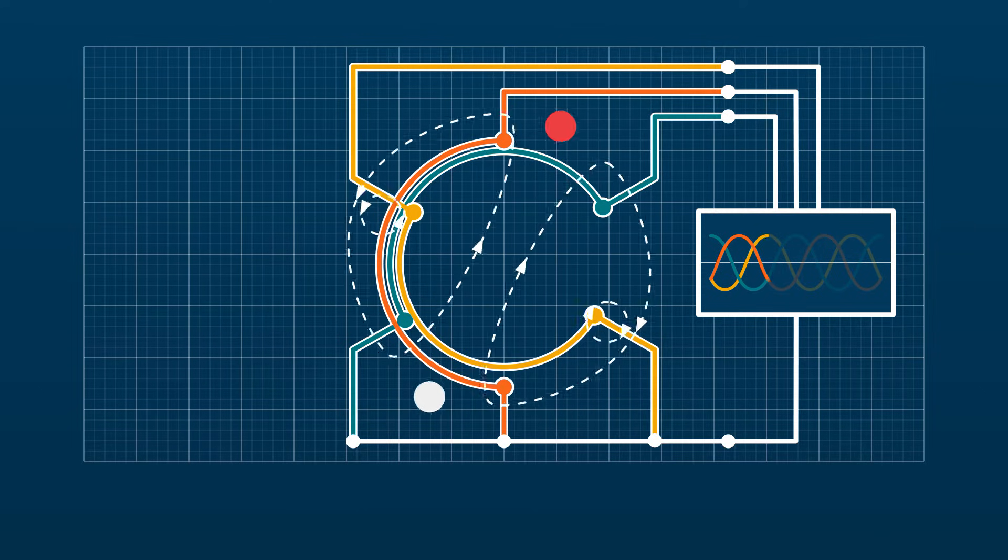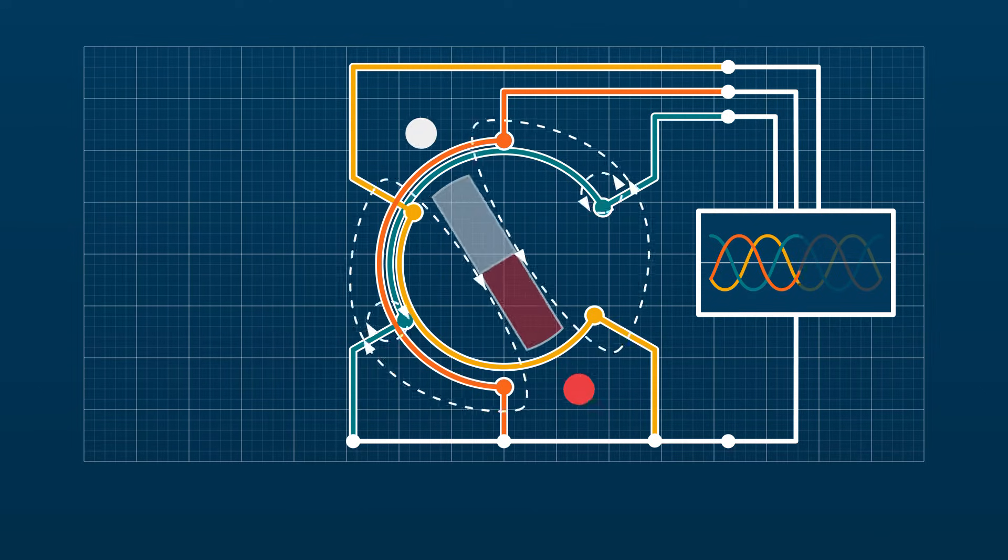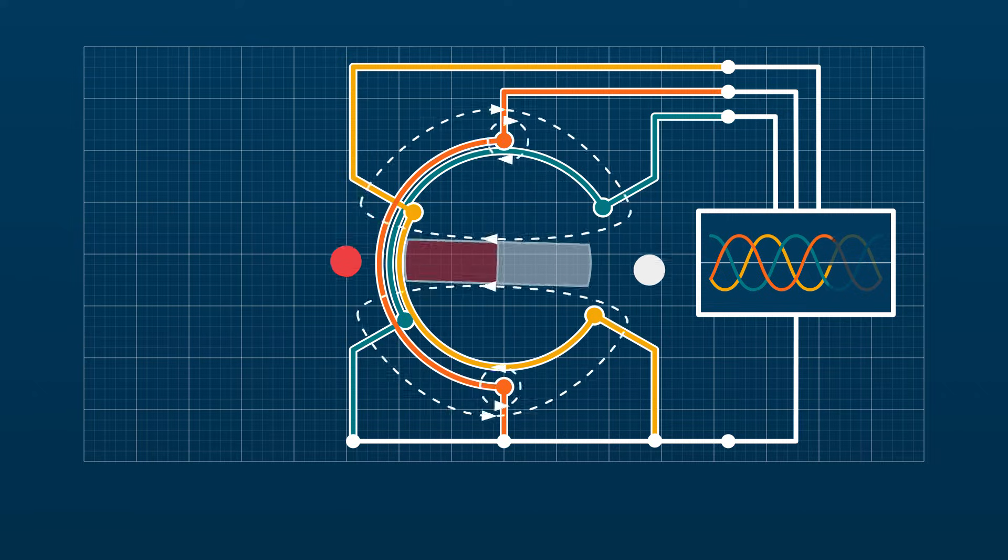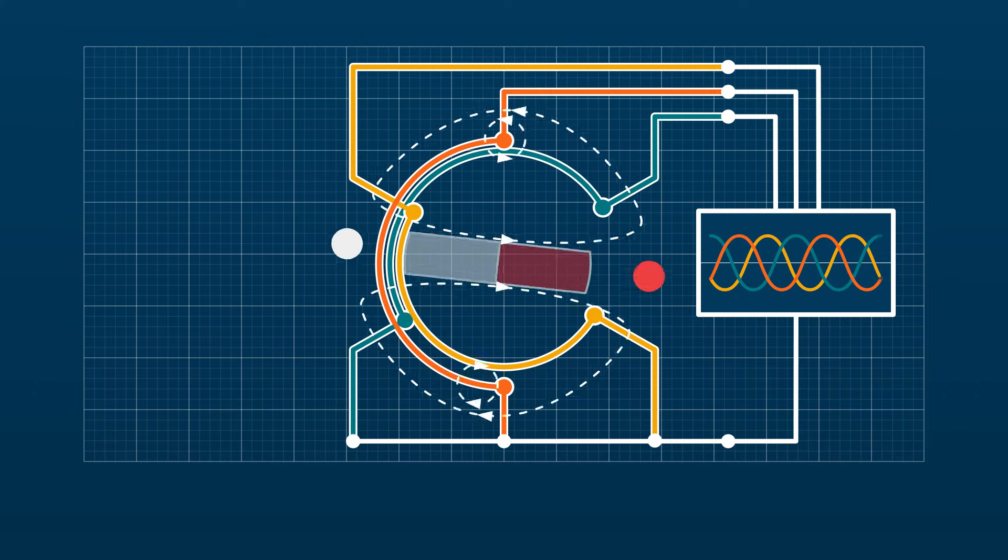The magnetic field of the rotor locks on to this magnetic field. In a synchronous generator, the rotor follows the frequency of the grid.